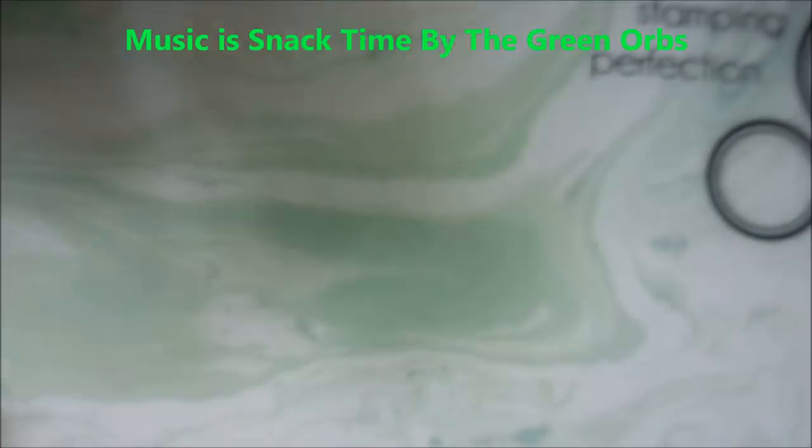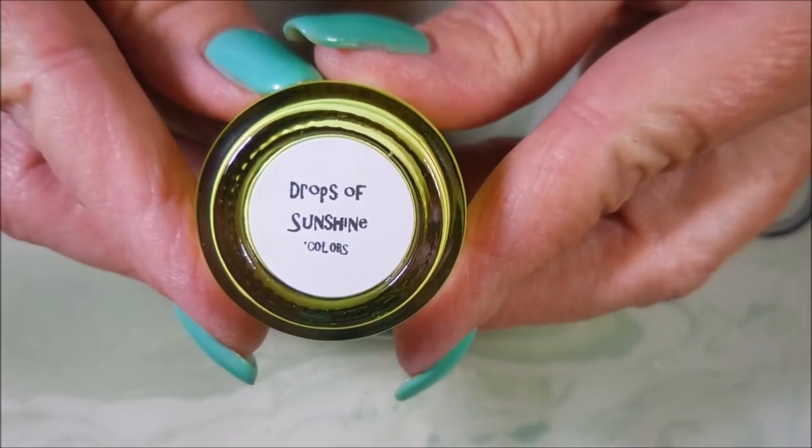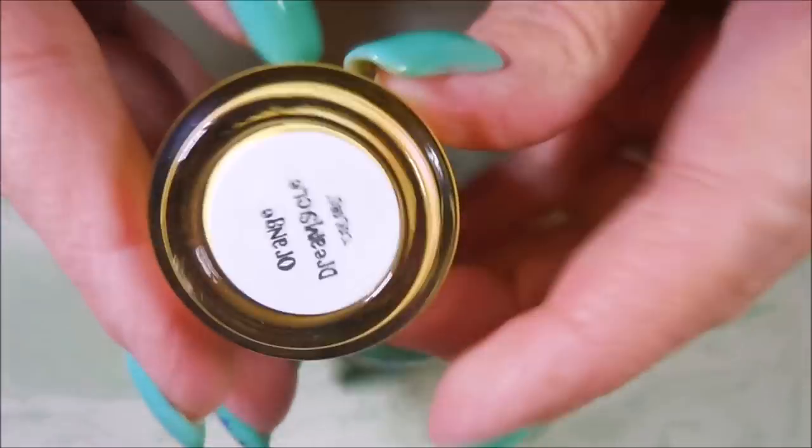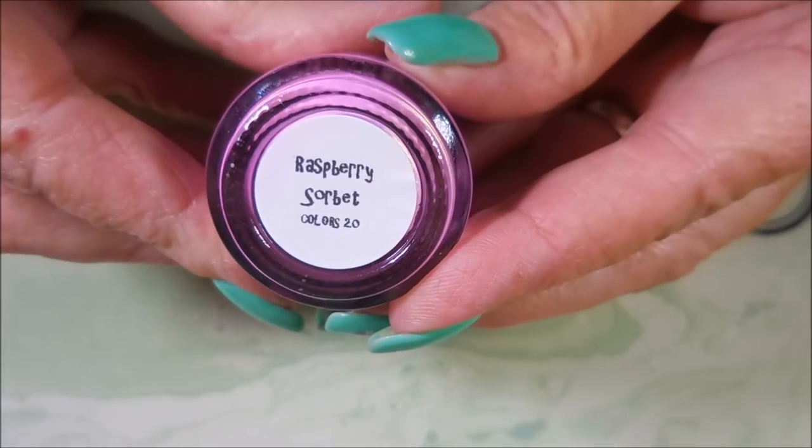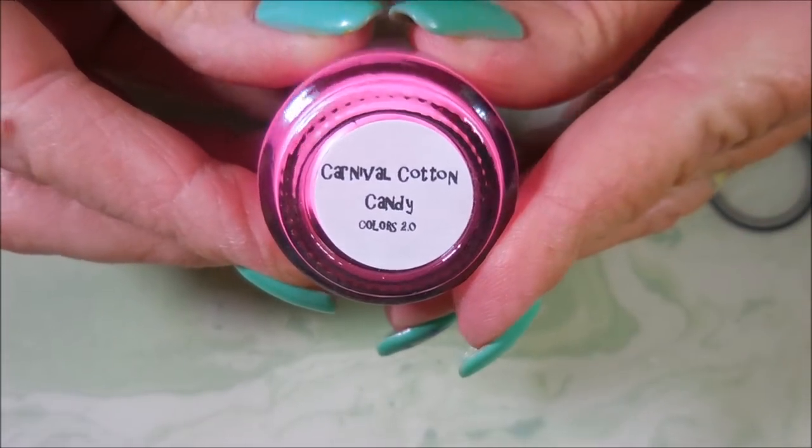We're going to start off and this is Honeydew Smoothies and Pistachio Ice Cream and Drops of Sunshine and Orange Dreamsicle, Raspberry Sorbet, and Carnival Cotton Candy.